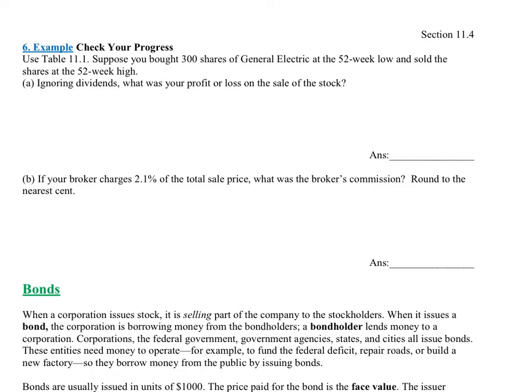Example 6 says use table 11.1. That's the table with all the stock information. Suppose you bought 300 shares of General Electric at the 52-week low and sold the shares at the 52-week high. Ignoring the dividends, what was your profit or loss on the sale of the stock?